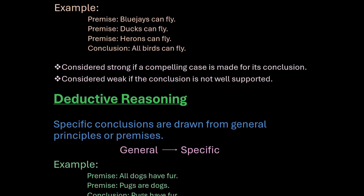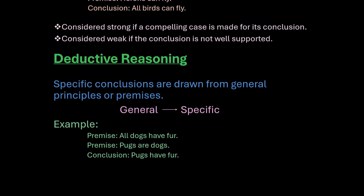Deductive reasoning, on the other hand, starts with general principles or premises and leads to a specific conclusion. For example, a deductive reasoning argument would have the premise: all dogs have fur; premise: pugs are dogs. We know both of those are true, and then our conclusion follows that pugs have fur — since pug is a type of dog and all dogs have fur.